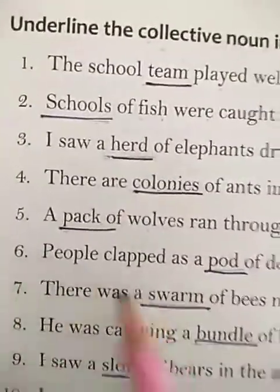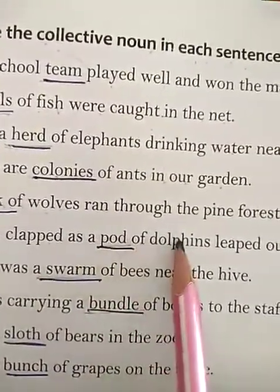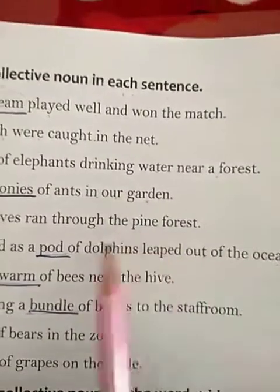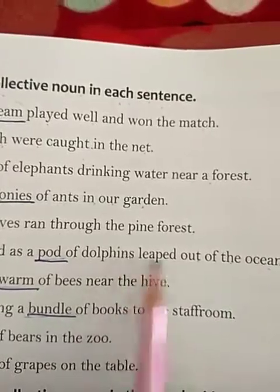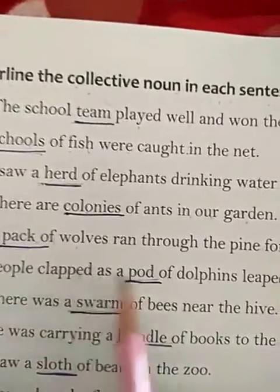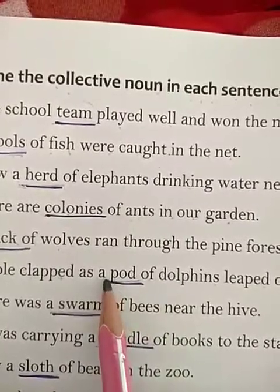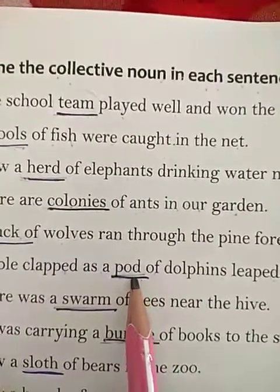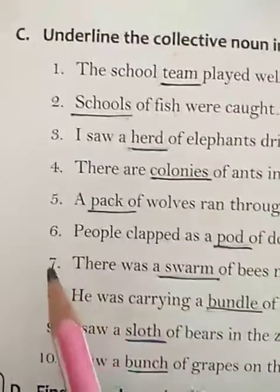Number 6: People clapped as a pod of dolphins leaped out of the ocean. As soon as the group of dolphins leaped out of the ocean, the people started clapping. Here, the group of dolphins is shown by the word 'pod', so pod is a collective noun. Underline it.